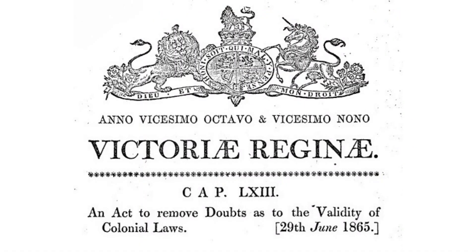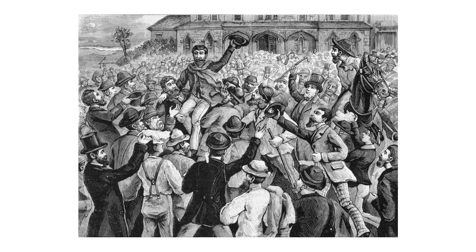In 1865, Britain passed the Colonial Laws Validity Act. The official and lengthy title of the act is largely self-explanatory: an act to remove doubts as to the validity of colonial laws. This allowed Australian colonies to overrule almost any English law. When the implementation of republicanism and resistance to authority occurred, these events were often associated with the United States in the Australian mind.